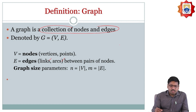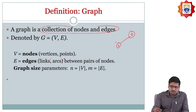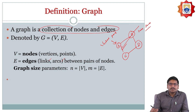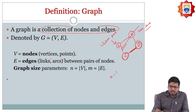A graph is nothing but a collection of nodes — which are nothing but vertices or points — and edges, which we call links or arcs. These links are going to be established between two vertices. The graph size parameter is where n should be the number of vertices and m should be the number of edges.